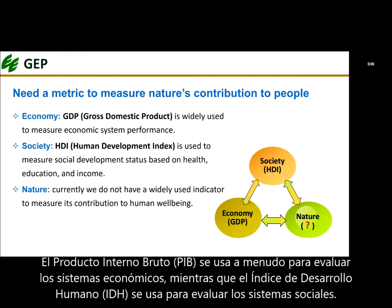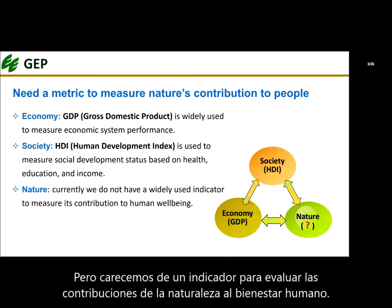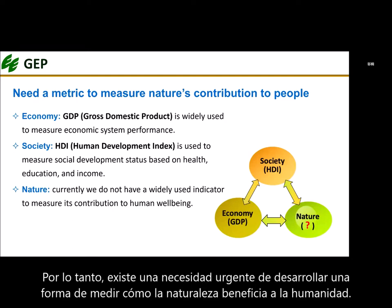Gross Domestic Product, or GDP, is widely used to assess the performance of economic systems, while the Human Development Index is used to assess the state of social systems. However, we lack an indicator to assess the contributions of nature to human well-being. Therefore, there is an urgent need to develop a way of measuring how nature benefits humanity.